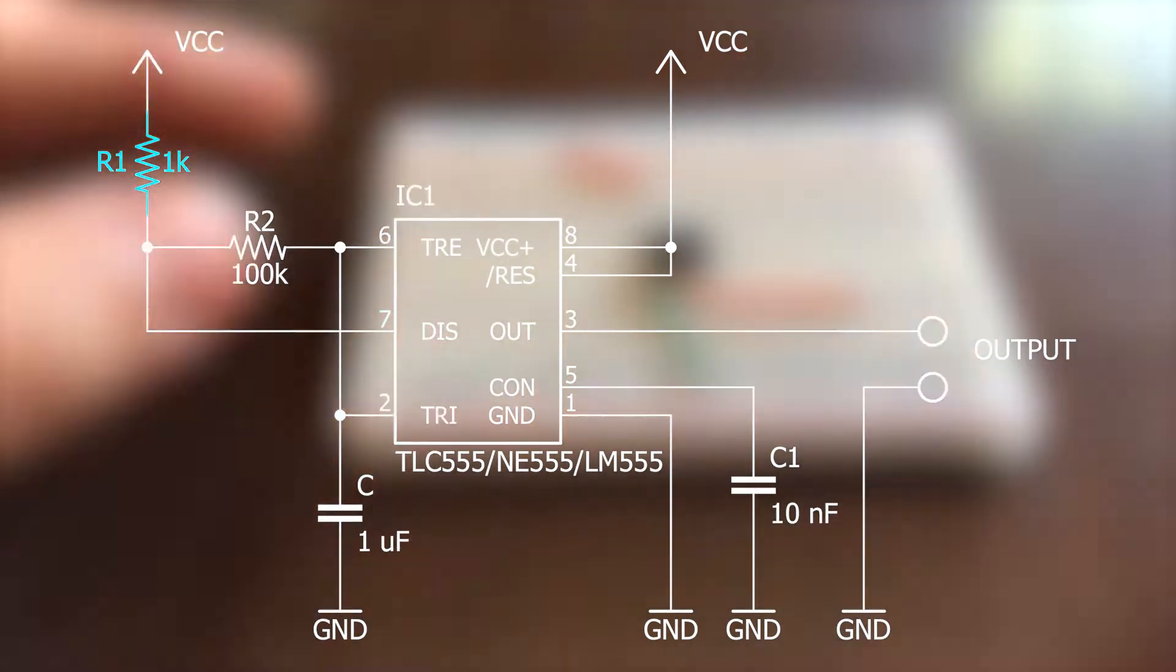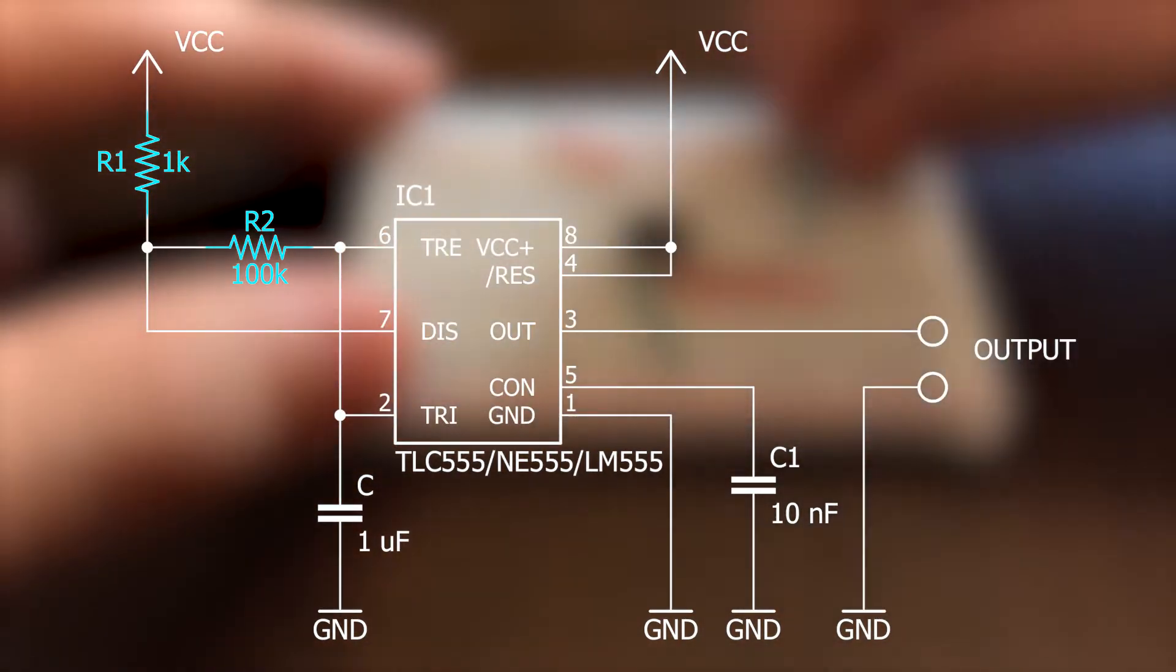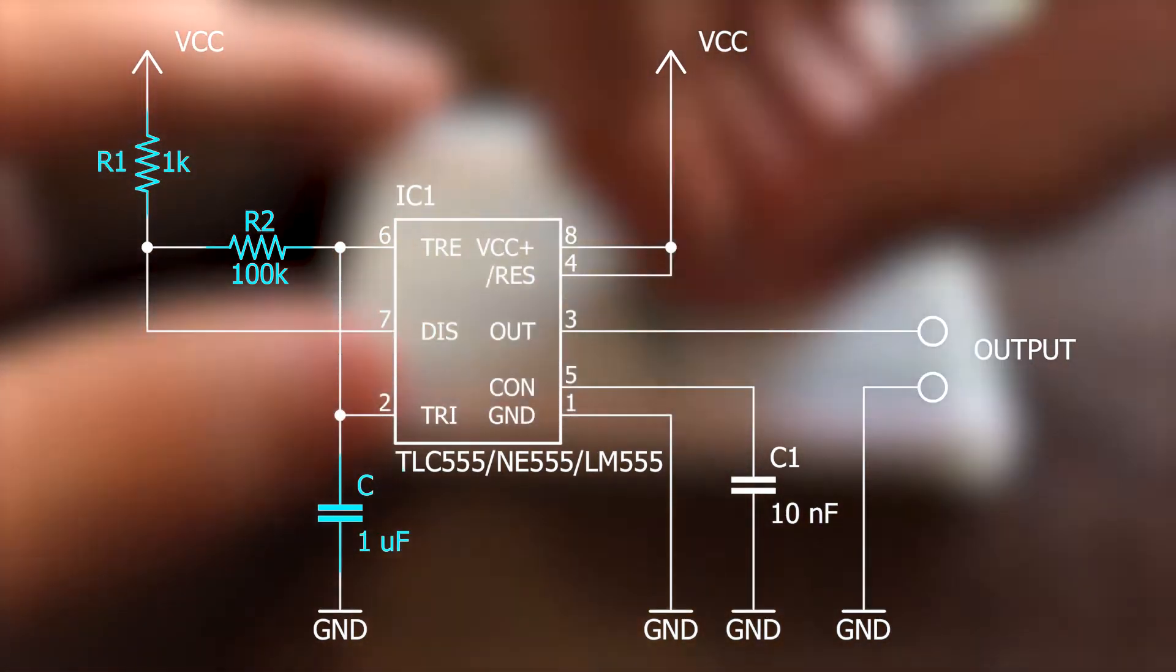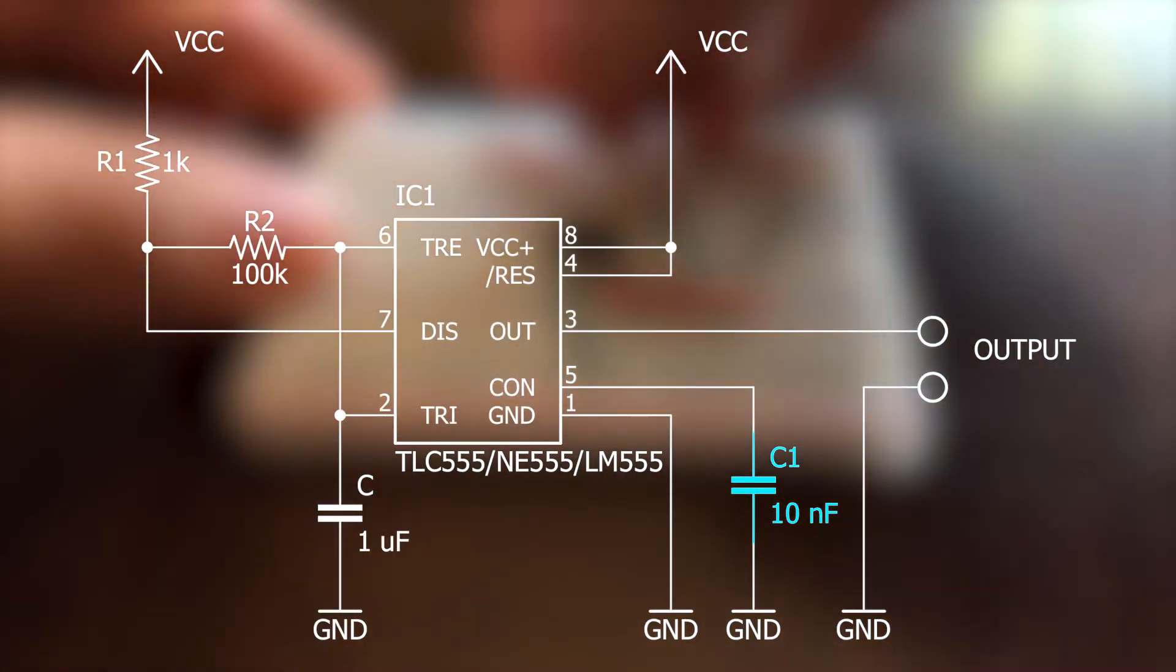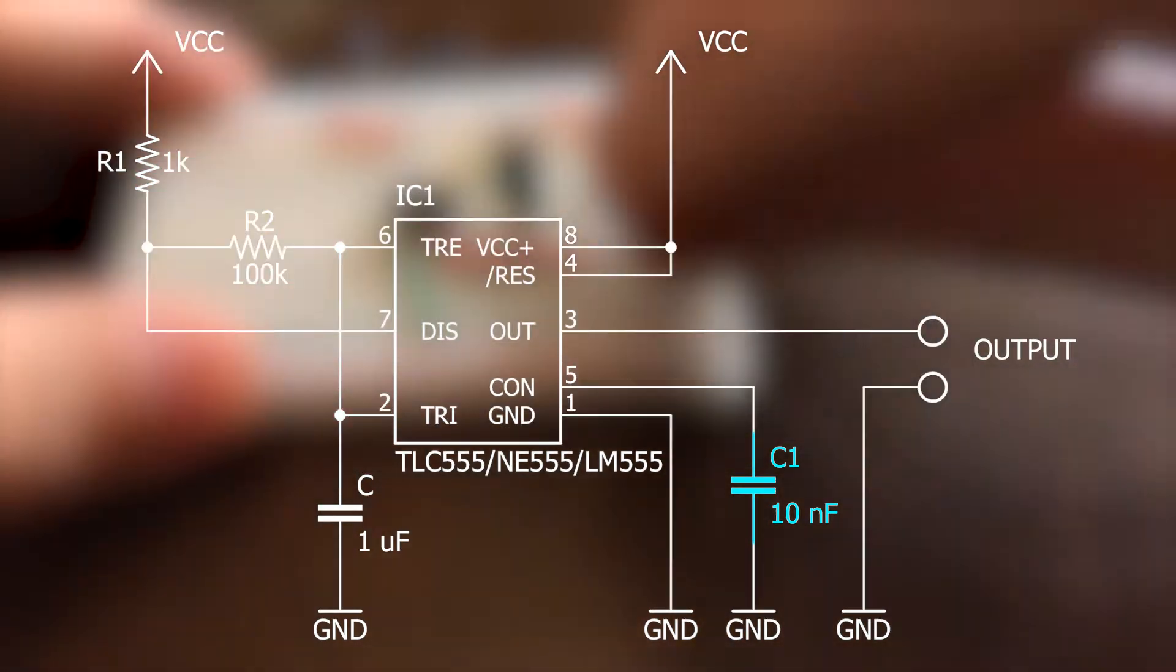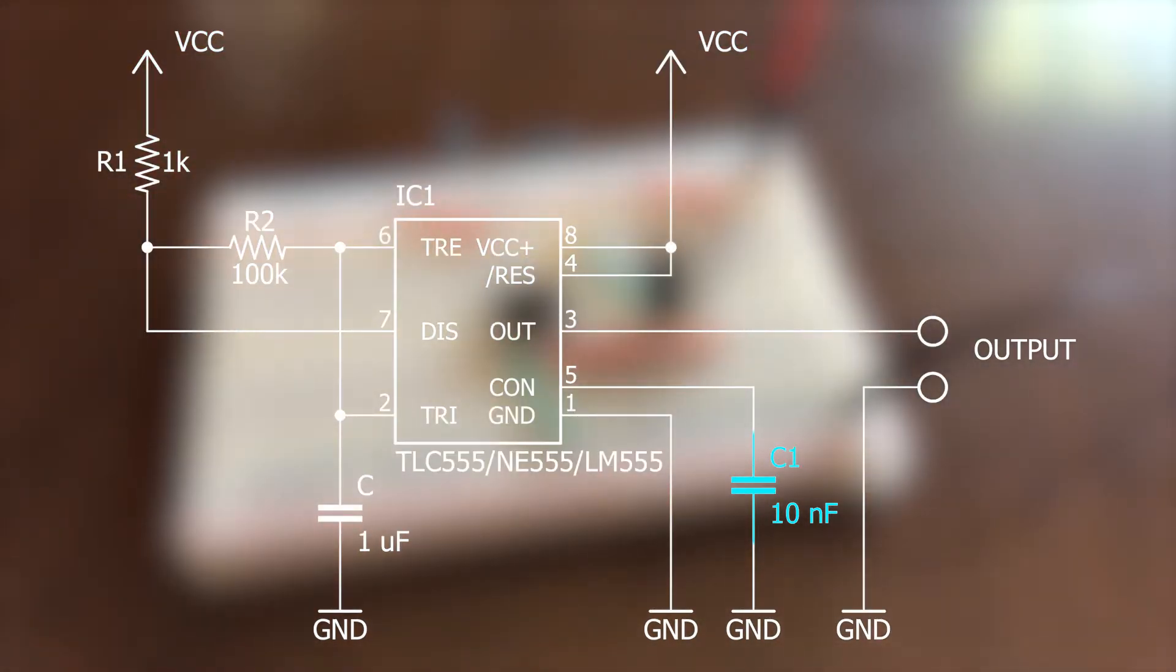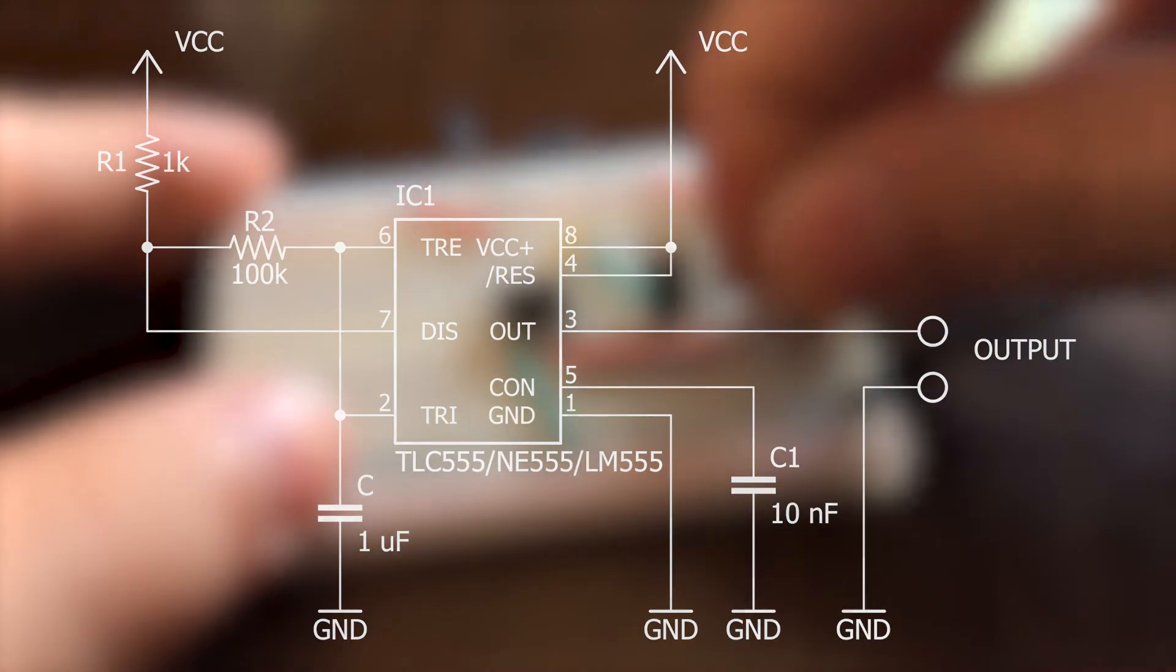For the values of R1 and R2, I went with 1K and 100K, while the capacitor is 1uF. The 10nF cap on pin 5 is not necessary for this circuit to work, but it is recommended to ground the pin 5 through it just to improve the overall stability of the timer.